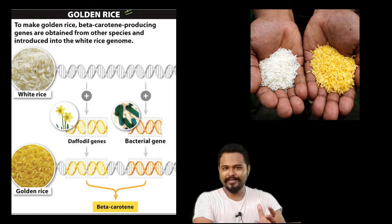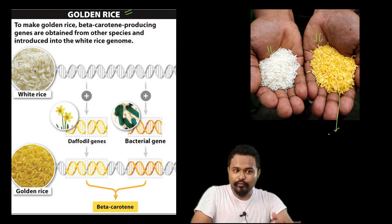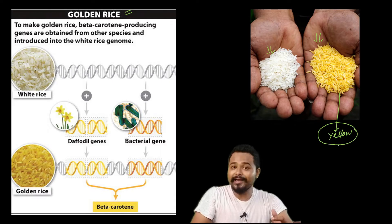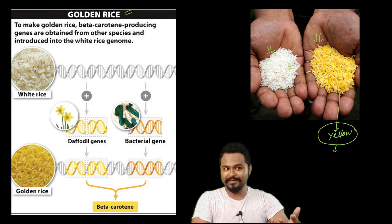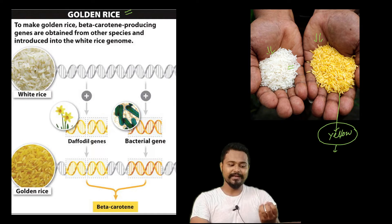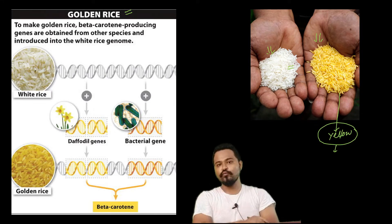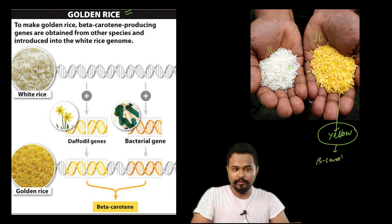What is golden rice? If you look at normal rice, it is white. But golden rice is yellow in color. This rice contains the beta-carotene gene, and the beta-carotene gene gives it that color.